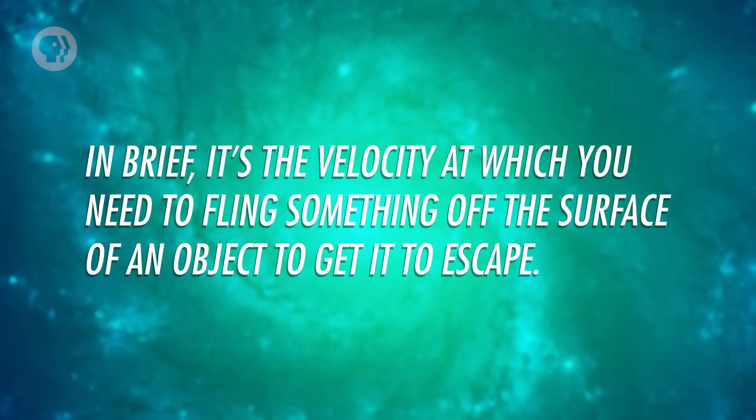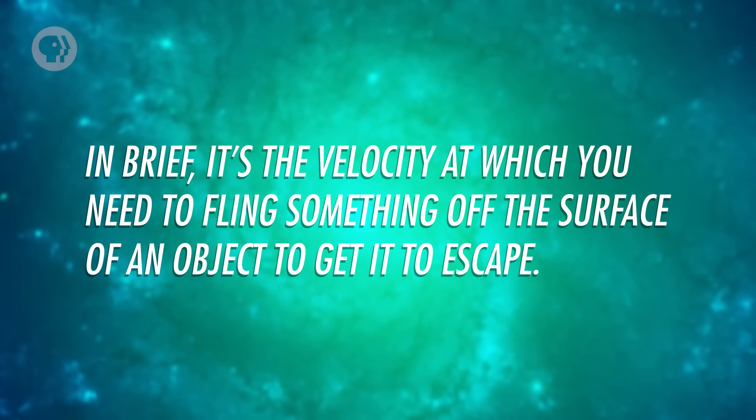Way back in Episode 7, I talked about escape velocity, and it's about to become a major player in the unfolding events of the collapsing core of a high-mass star. In brief, it's the velocity at which you need to fling something off the surface of an object to get it to escape.